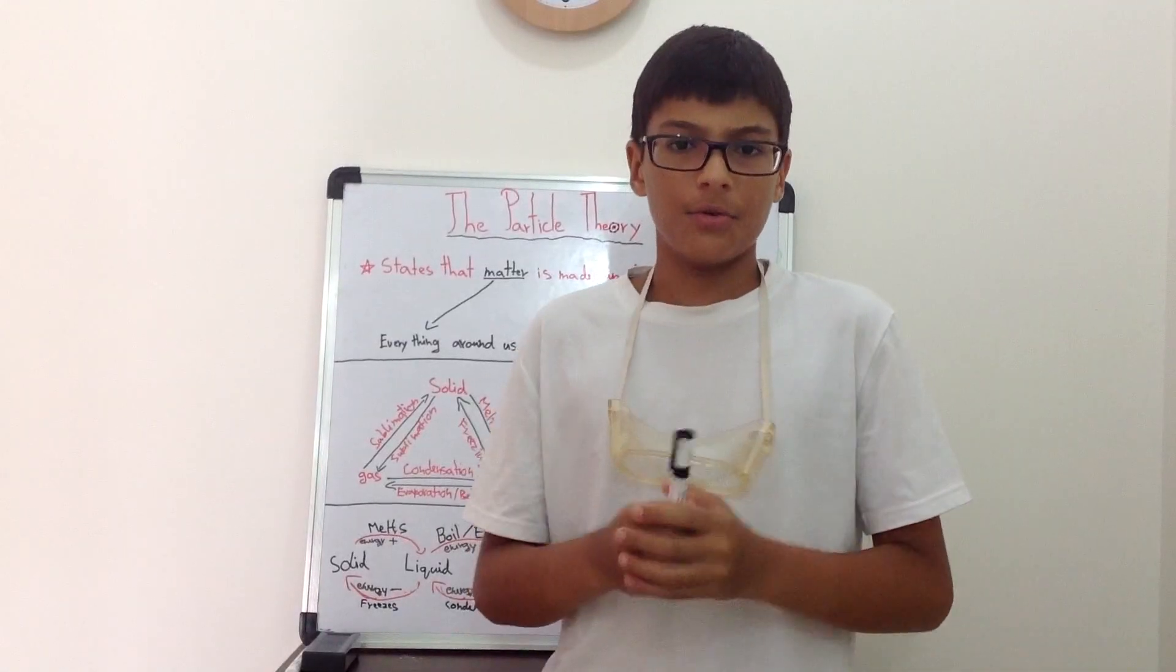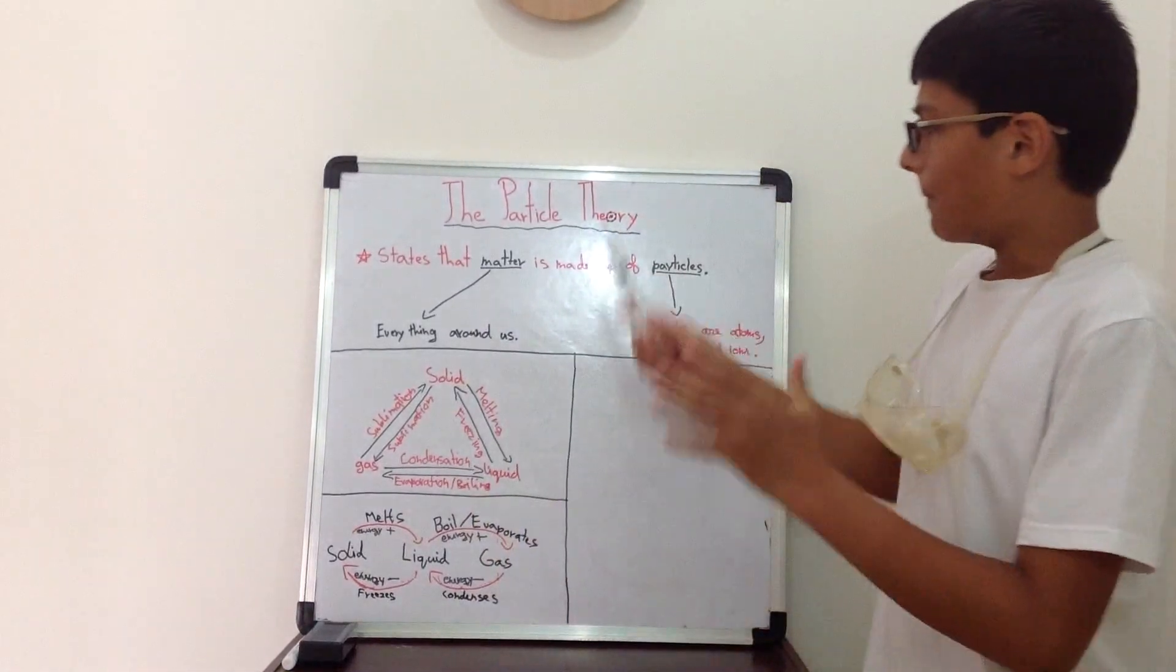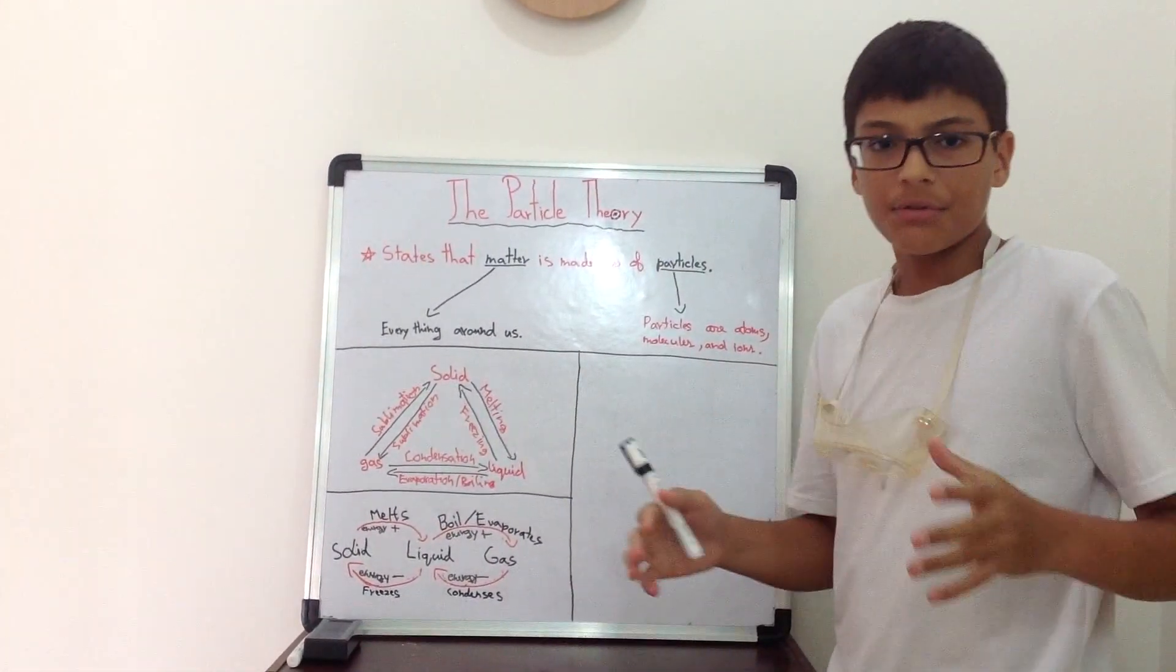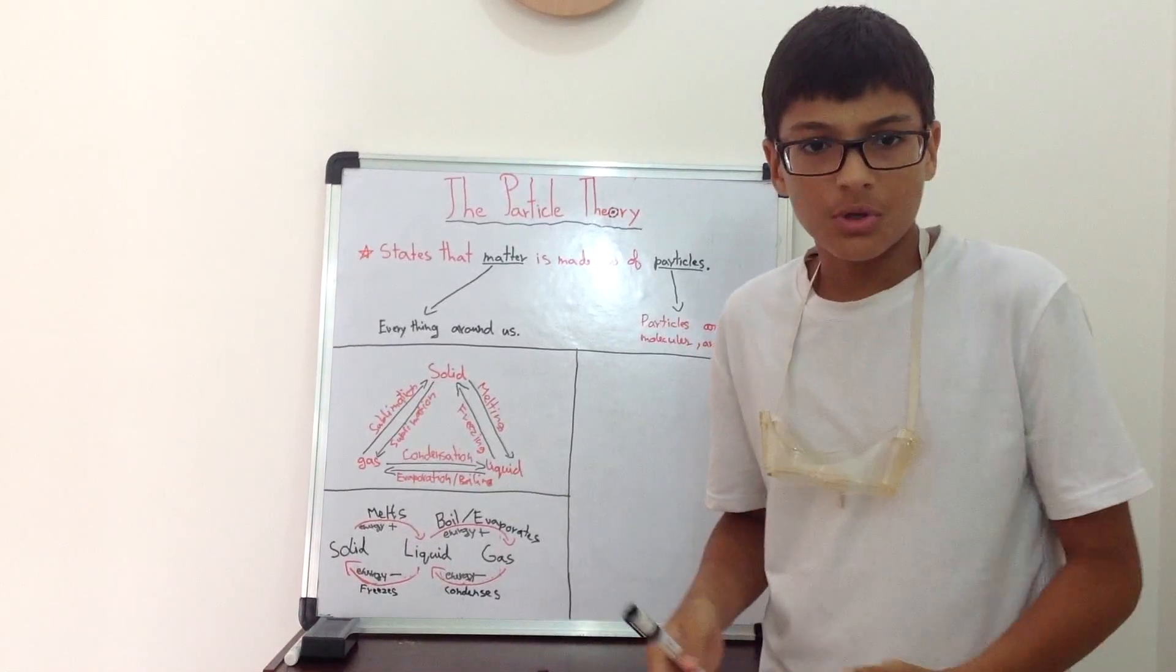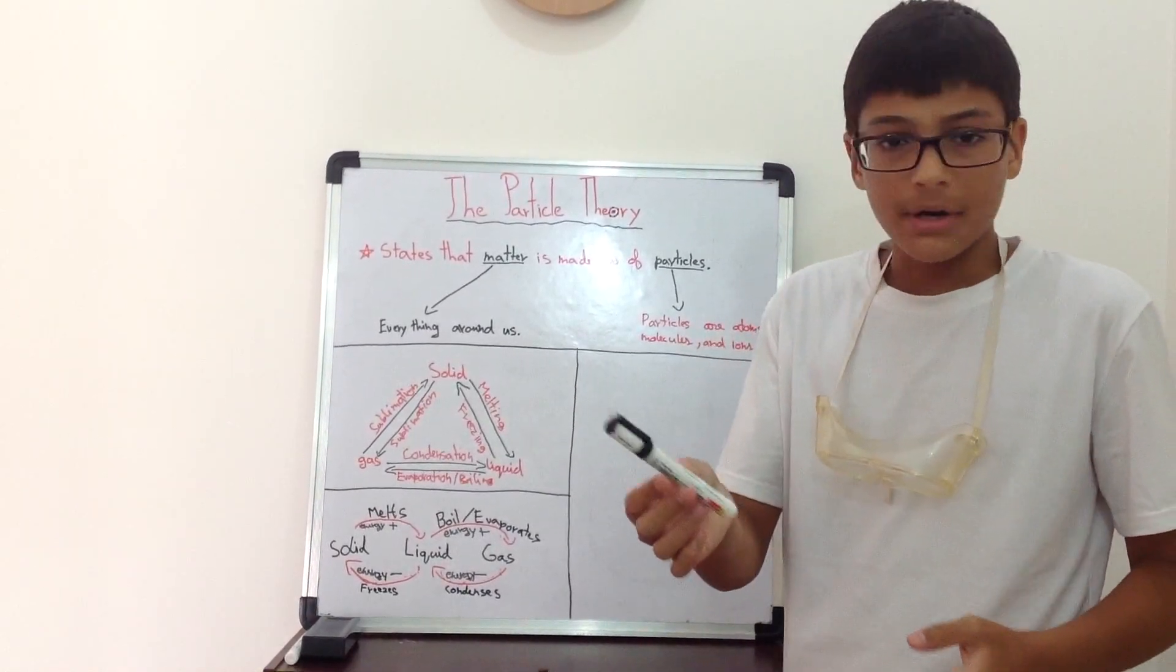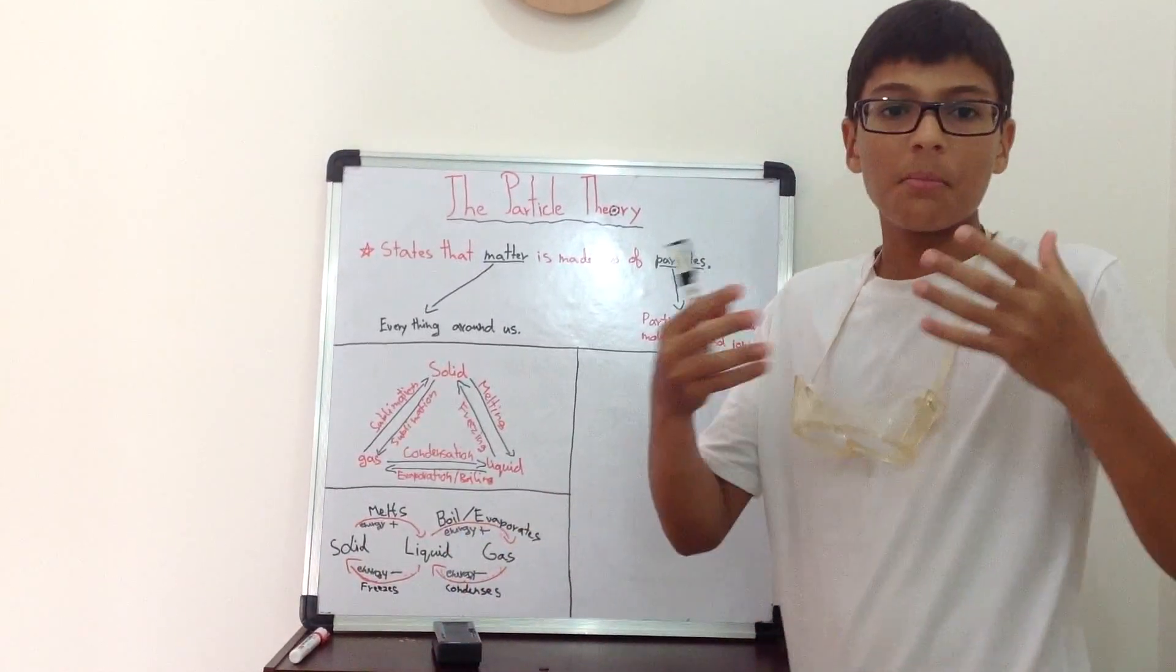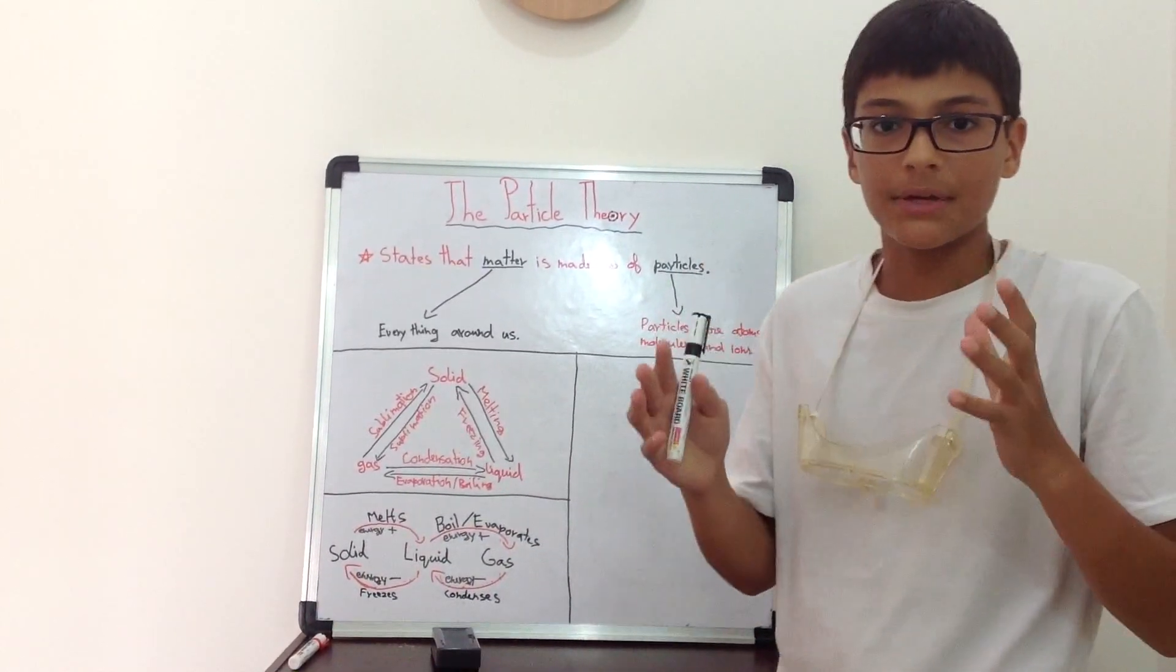So the particle theory states that matter is made up of particles. Matter is everything around us. It is like a bar of chocolate, this board marker, this board itself, and the board eraser. It's all made up of matter. Everything is made up of matter.